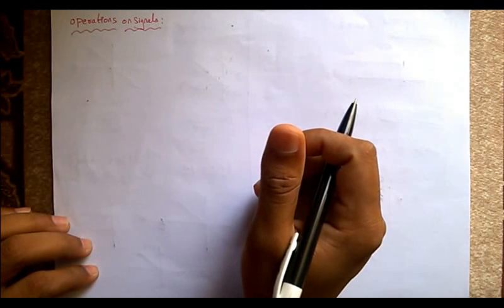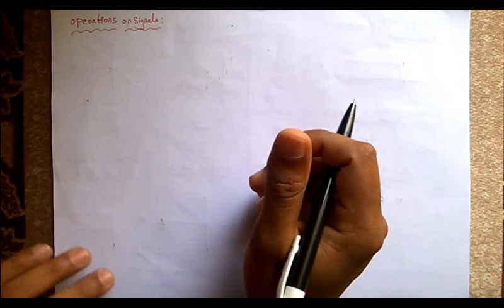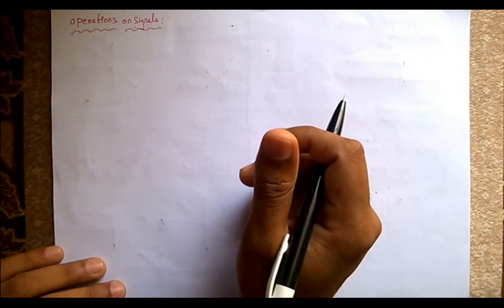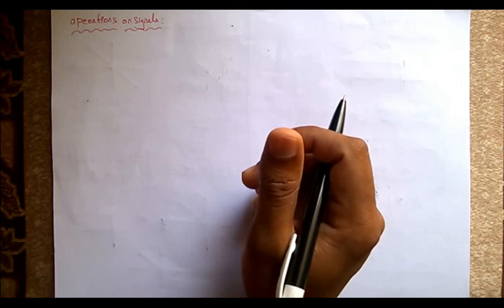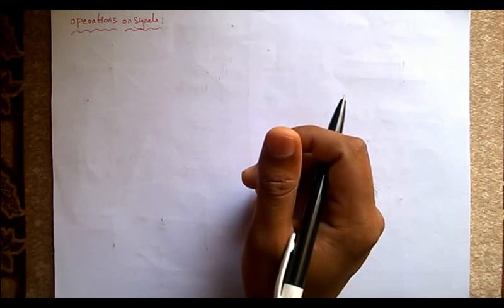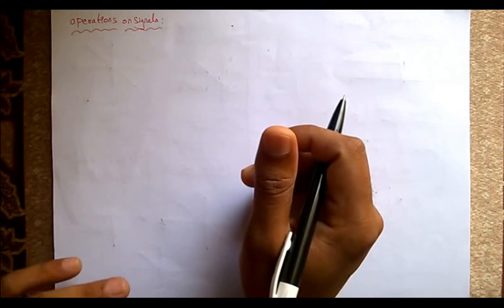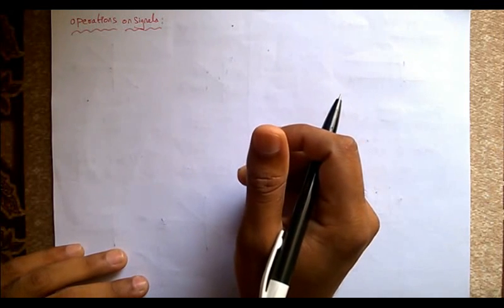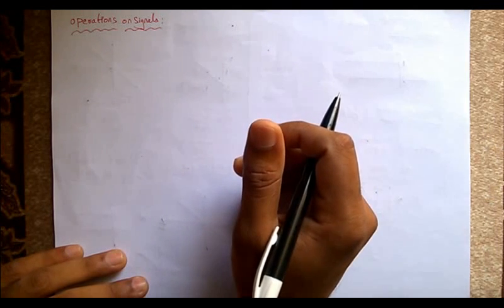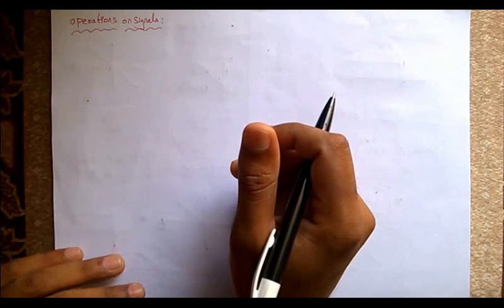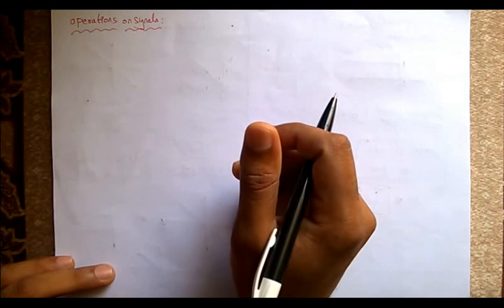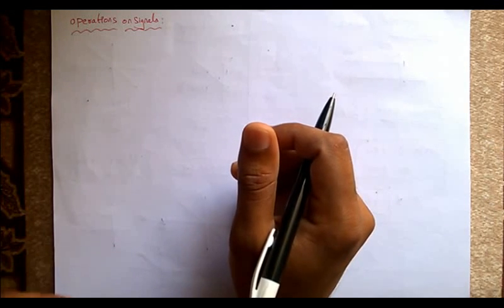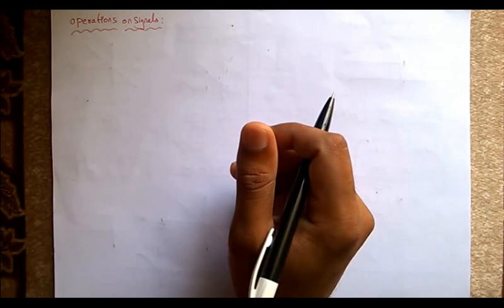Welcome to Electronics to the Point. In this video we will see the various operations performed on signals. In our last video we saw the different types of signals involved in the evaluation of signals and systems. Continuing from the basic parts, we move to the next part: the application of different operations on signals — time delay, time advancement, time reversal, and time scaling.